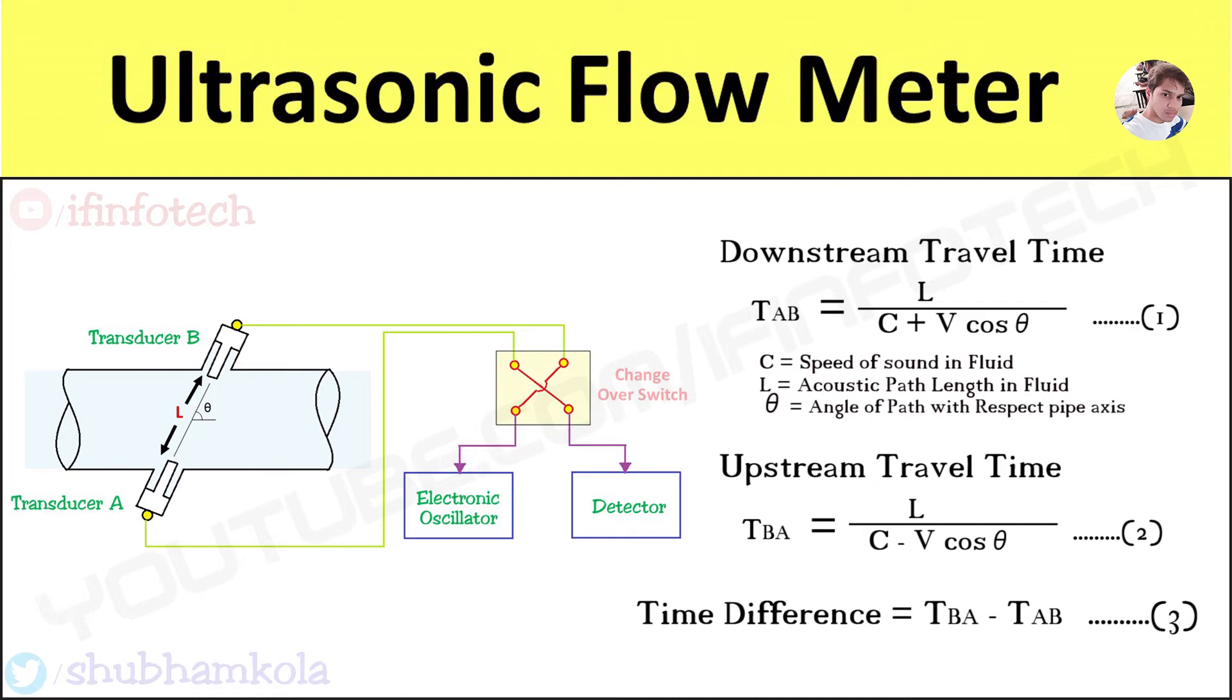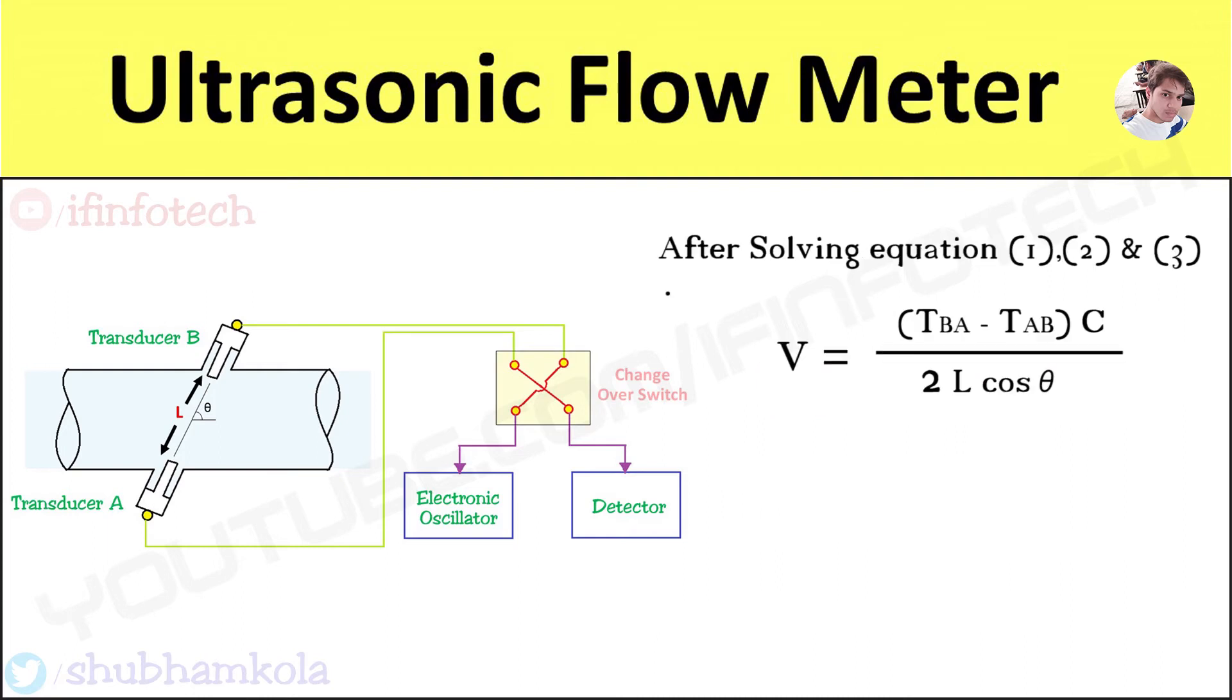After simplifying this equation, we will get the final equation: V equals C times time difference upon 2L cos theta. Here we have the value of C, L, and theta. The value of time difference is calculated by equations 1, 2, and 3. Putting all the values in the equation, we will get the value of V, that is flow velocity.